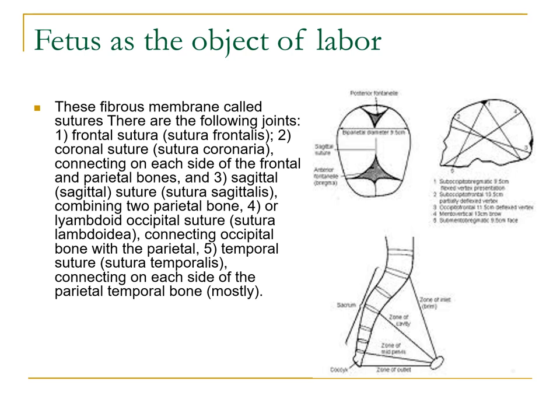These fibrous membranes are called sutures. There are the following joints: number one is your frontal suture (sutura frontalis); coronal suture (sutura coronaria), connecting on each side the frontal and parietal bones; and the sagittal suture, combining the two parietal bones; or your lambdoid occipital suture (sutura lambdoidea), connecting the occipital bone with the parietal. Your temporal suture connects each side of the parietal, temporal, and bone.